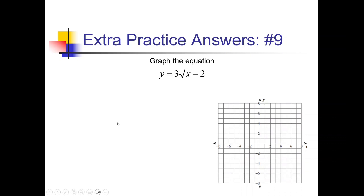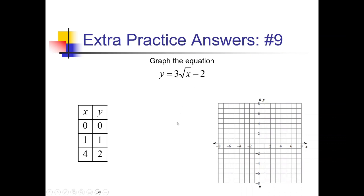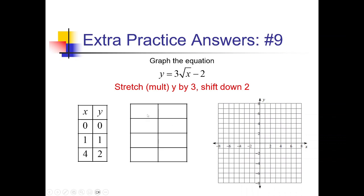On this next one, the 3 outside stretches vertically by 3, and minus 2 outside shifts down 2. Nothing is happening to the x's, so I just rewrite x: 0, 1, and 4. For the y's: 3y minus 2. So 3×0 minus 2 is -2; 3×1 minus 2 is 1; and 3×2 is 6 minus 2 gives 4. Endpoint is (0, -2), then (1, 1) and (4, 4). Draw the graph through those points.